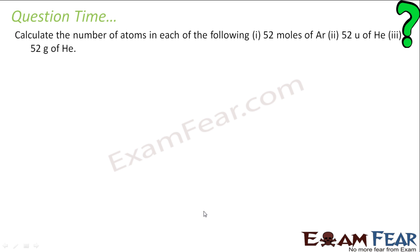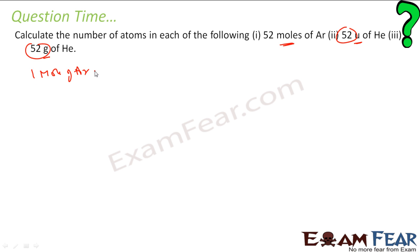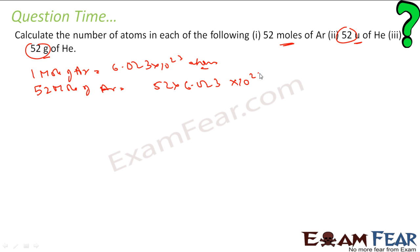Calculate the number of atoms in each of the following: 52 moles of argon, 52 atomic mass units of helium, and 52 grams of helium. For 52 moles of argon: 1 mole of any element contains 6.023 × 10²³ atoms, so 52 moles of Ar = 52 × 6.023 × 10²³ = 3.131 × 10²⁴ atoms.